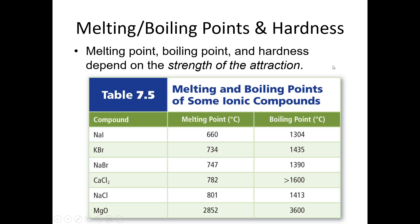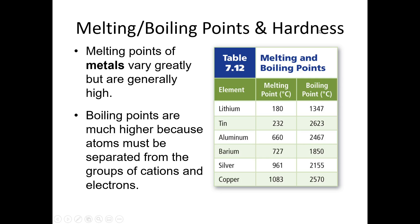When we examine the physical properties of substances — melting points, boiling points, and hardness — they're going to be dependent on the strength of attraction. Looking at a table of ionic compounds, various salts, we can see that their melting points and boiling points are very high. It takes a lot of energy to separate those atoms to change phase from solid to liquid. Metal melting points generally vary greatly but are often very high, similar to ionic compounds.